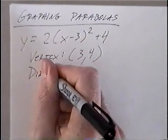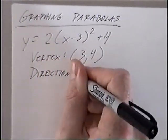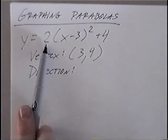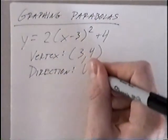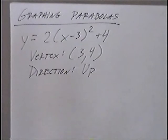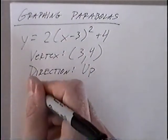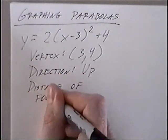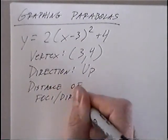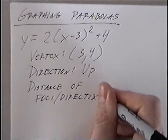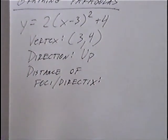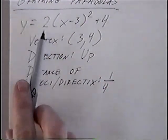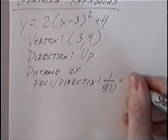For the direction, it would either be up or down. We look at the a value, which is the number in front of the parenthesis. If this number is positive, then the direction of the parabola would be up. The last part is the distance of foci and directrix, and the equation is 1 over 4a, which would be 1 over 4 times 2, giving us 1 over 8.